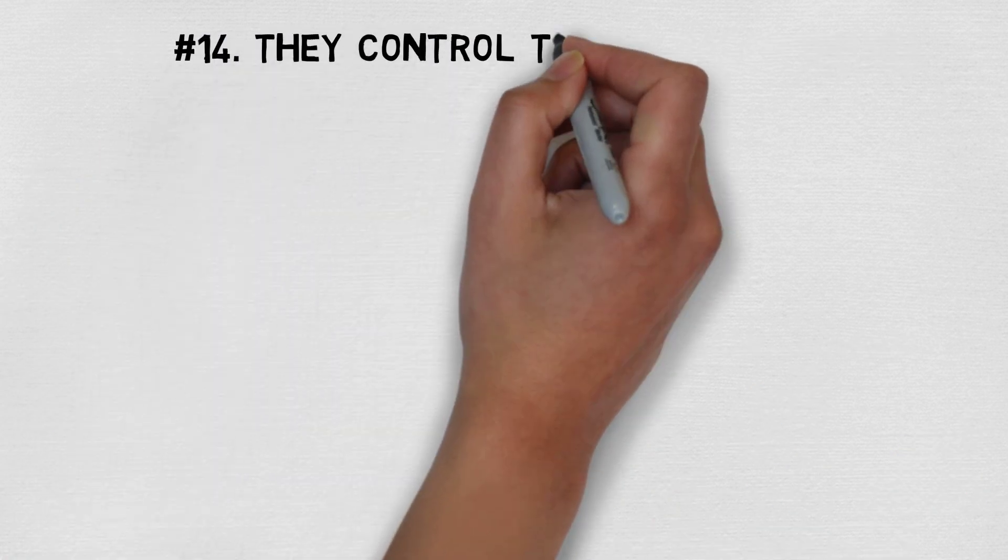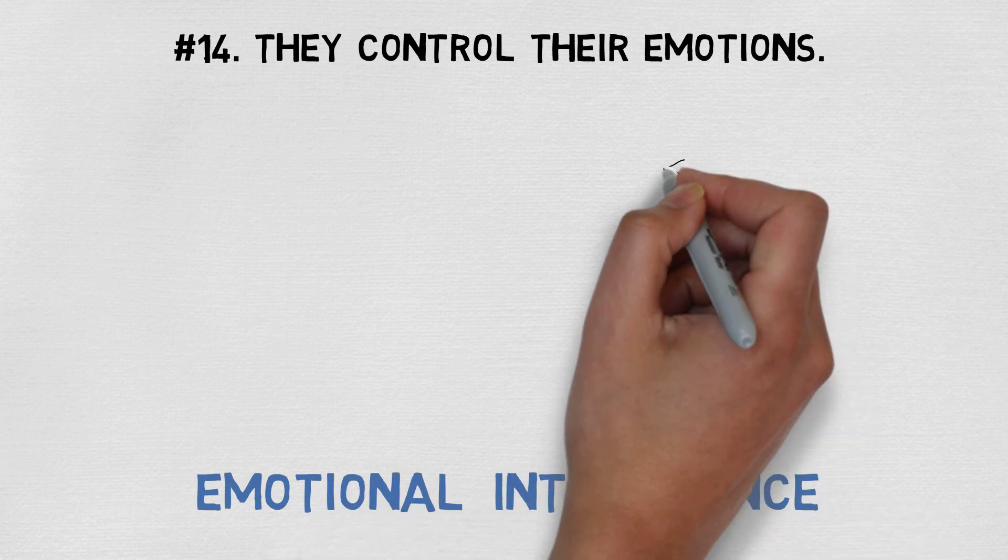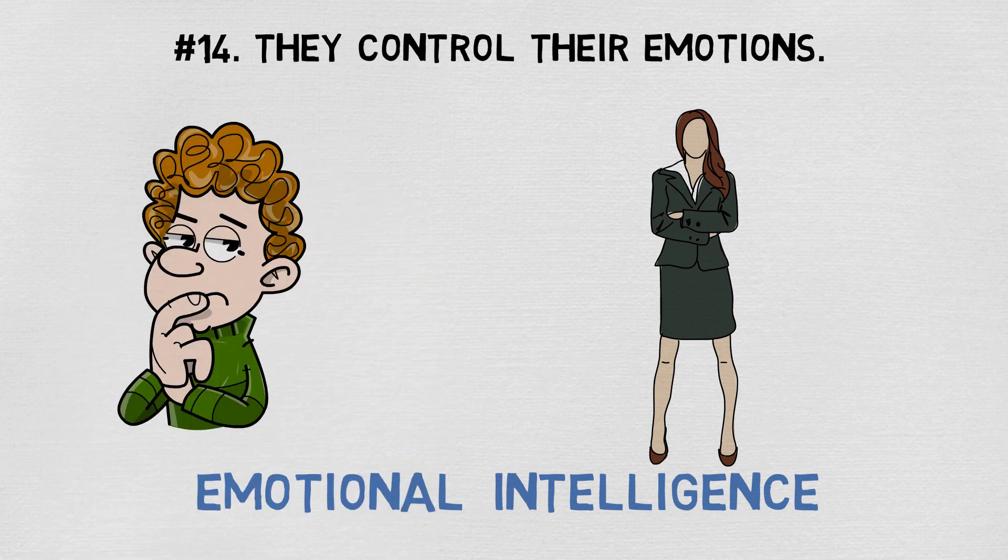Number fourteen, they control their emotions. Another sign of intelligence which is often overlooked is emotional intelligence. This is when someone knows how to rein in and control their feelings. You'll be surprised how many adults don't have this very important trait.